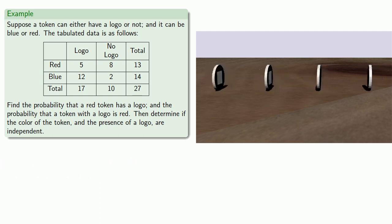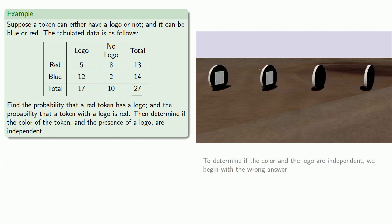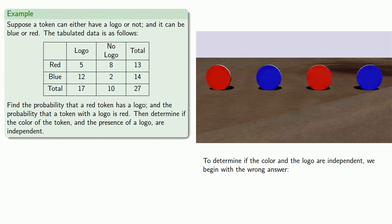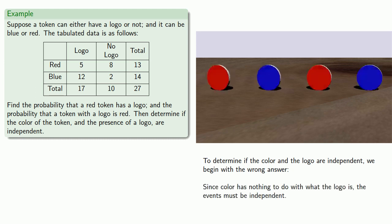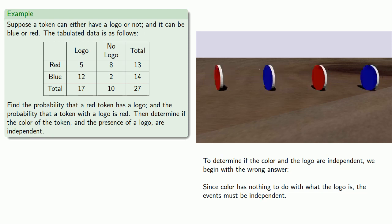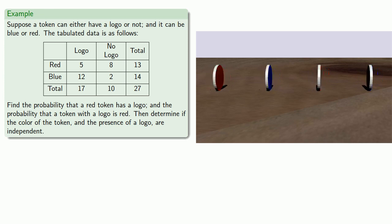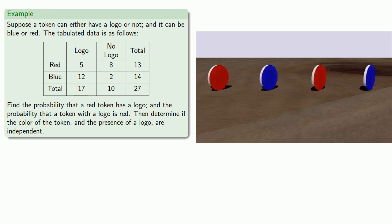To determine if the color and logo are independent, we'll begin with the wrong answer — an important skill for those who hope to become politicians or political commentators. The immediate wrong answer goes something like this: since color has nothing to do with what the logo is, the events must be independent. I don't need to look at evidence. For the rest of us who hope to be good citizens of a functioning free society, we do want to look at the evidence.